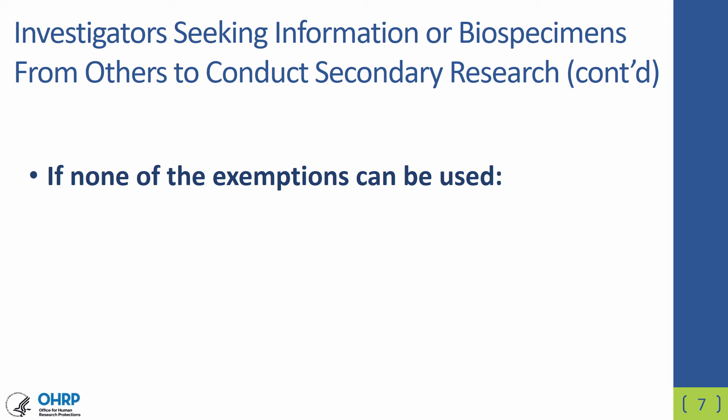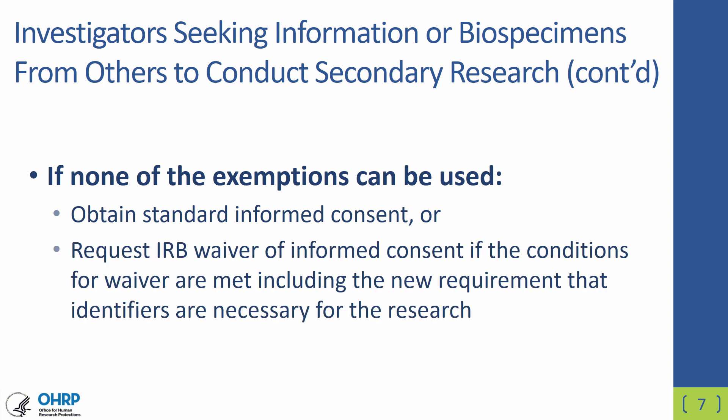If none of the exemptions can be used, then it will have to be done under non-exempt human subjects research, which means it will require IRB review of some sort, and they will need to obtain standard informed consent — going back to subjects to ask for informed consent in order to retain the identifiers. Or they can go to the IRB and request a waiver of informed consent. Under the revised common rule, there is a new condition the IRB must verify: that the research requires the use of identifiers and that identifiers are necessary for this research.